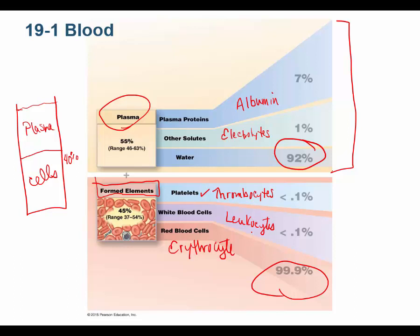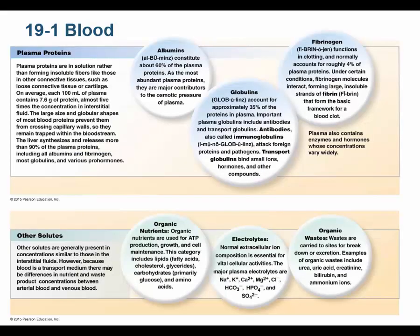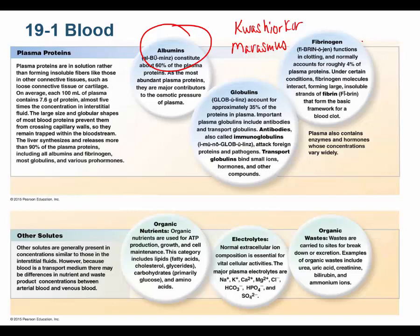Albumin is the major plasma protein. Without adequate albumin you get diseases like kwashiorkor and marasmus. Albumin exerts osmotic pressure on the blood, causing osmotic recall of water. If you lack albumin, water leaves the blood, leading to kwashiorkor or marasmus.